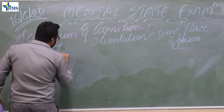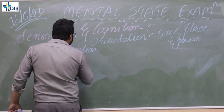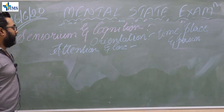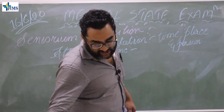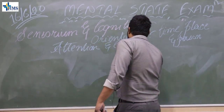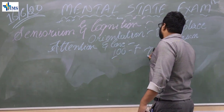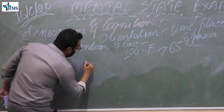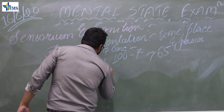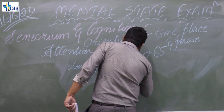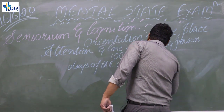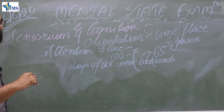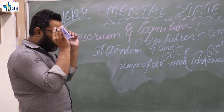After orientation, we come to attention and concentration. We do a test where we tell the patient to start counting from 100 minus 7, for five counts, which comes to 65. If the patient is literate. If the patient is not literate, we can ask them to say the days of the week backwards, or forwards if still unable. There are steps, and we need to find out how much the patient is paying attention.